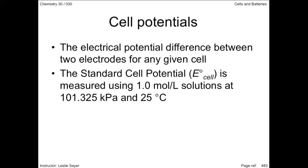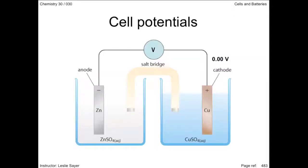The cell potential is the difference in energy of the electrons between the anode and the cathode. If we were to arbitrarily set one of the electrodes to have an electrical potential of zero, the voltmeter measures the difference between the two electrodes, and that voltage becomes the cell potential. Let's illustrate this point by setting the copper half-cell to have a half-cell potential of zero volts — that is, we make it the reference half-cell.